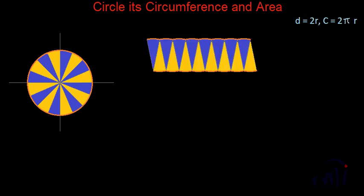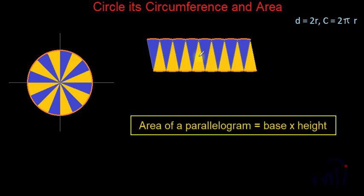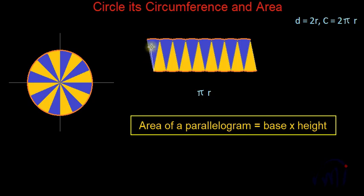In this fashion we have converted our circle into a parallelogram where the base of the parallelogram is equal to half of the circumference, which is half of 2πr = πr. The height of the parallelogram is equal to the radius of the circle, because if I draw a perpendicular on the opposite side it is nothing but the radius. So the area of this parallelogram is πr × r = πr².